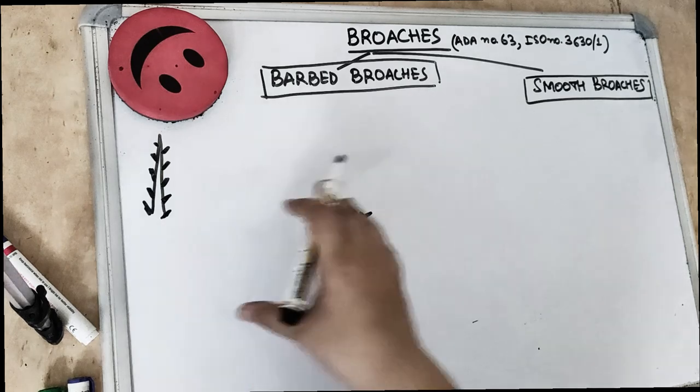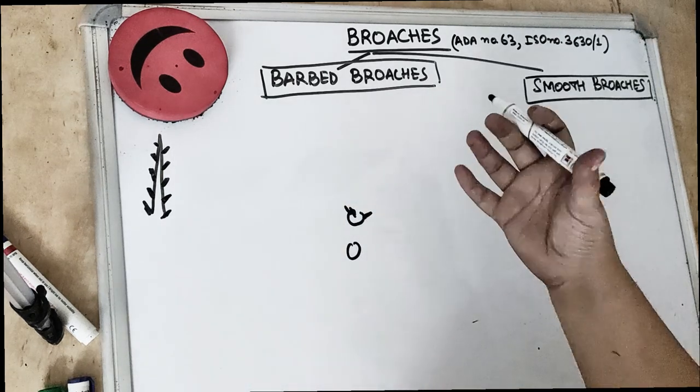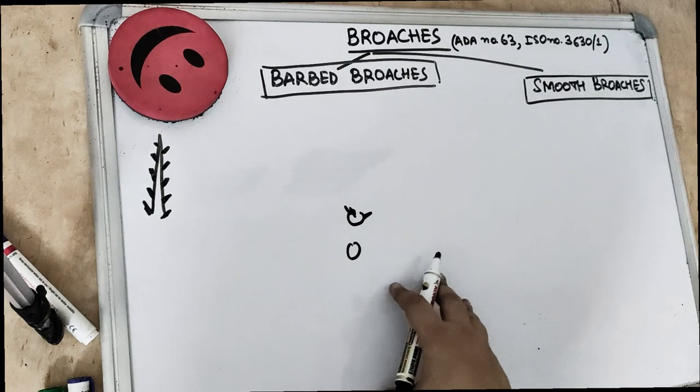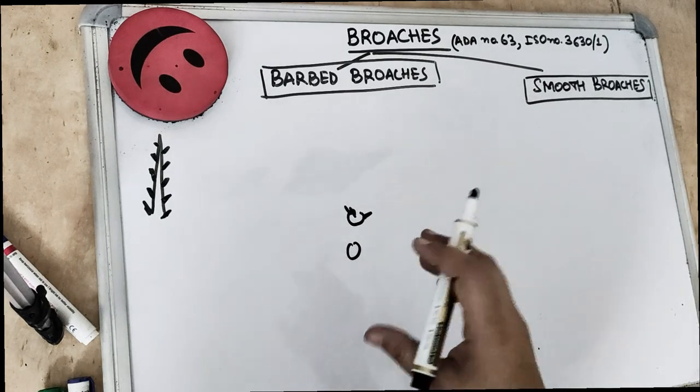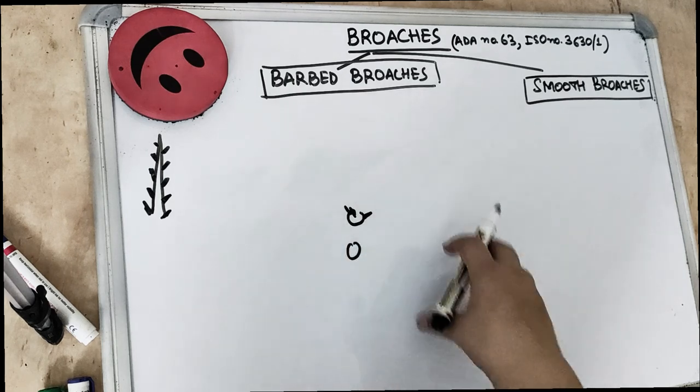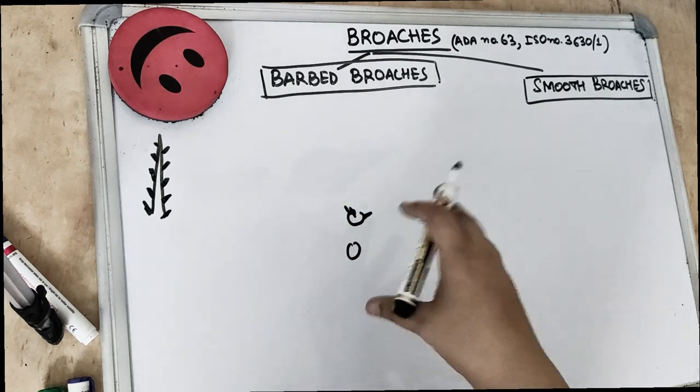So these broaches are used to remove the vital pulp. They are used to loosen the debris in the necrotic canal and also to remove the paper points or if any cotton pellets are stuck onto the canal.